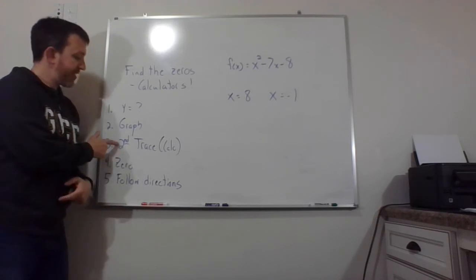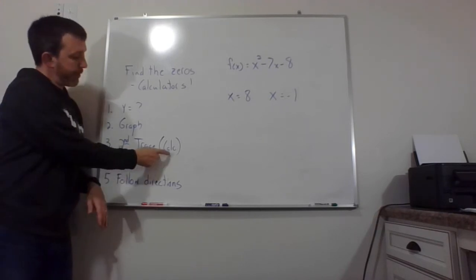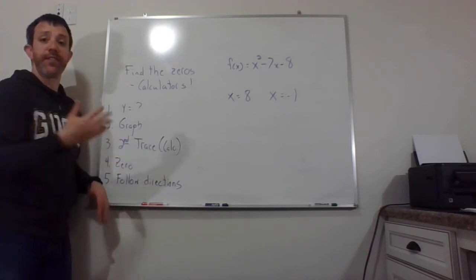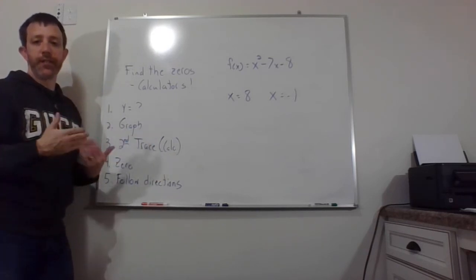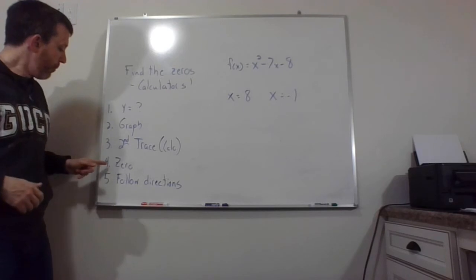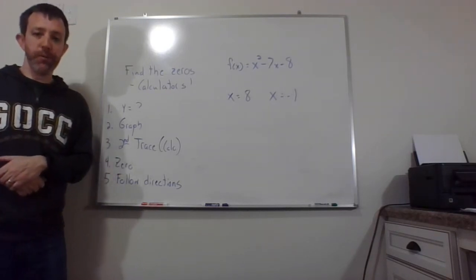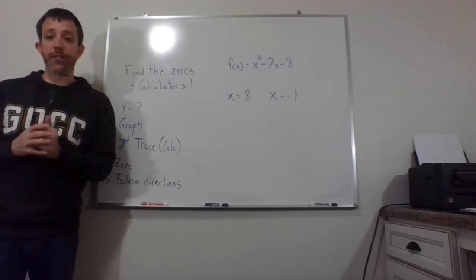After you hit the graph button, second trace. You're aiming for the word that says calc. And since it's above the button, you have to use the second button to get to it. Once you do that, pick the one that says zero. And then you're going to follow the directions on your calculator.